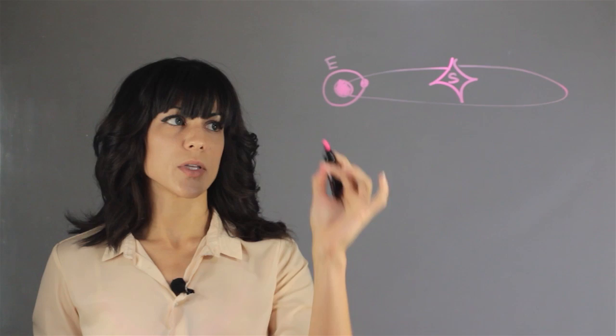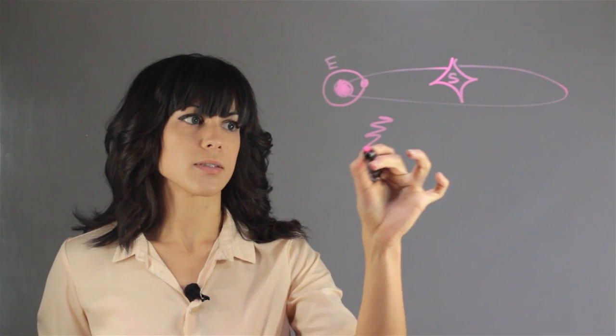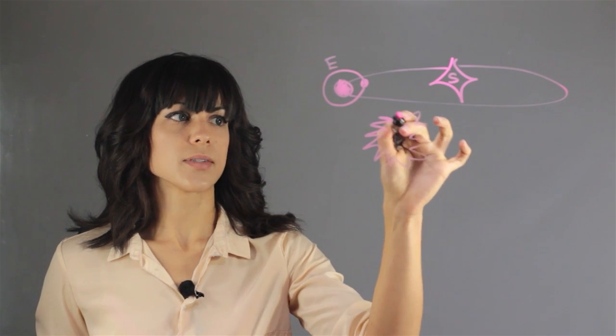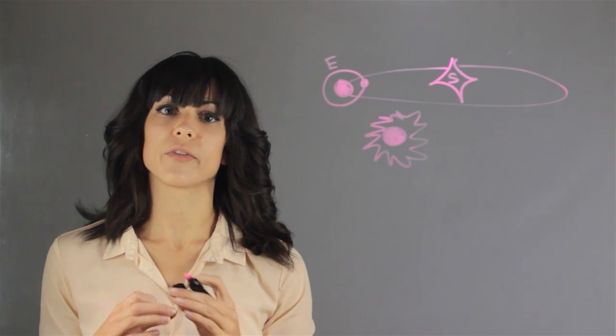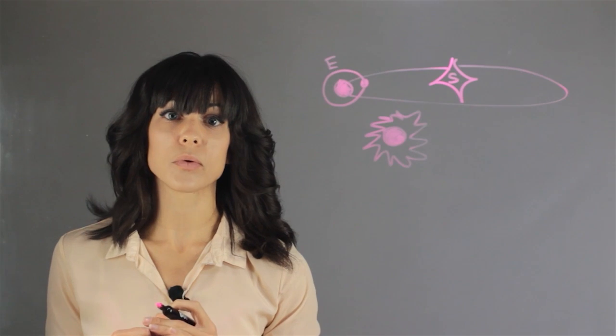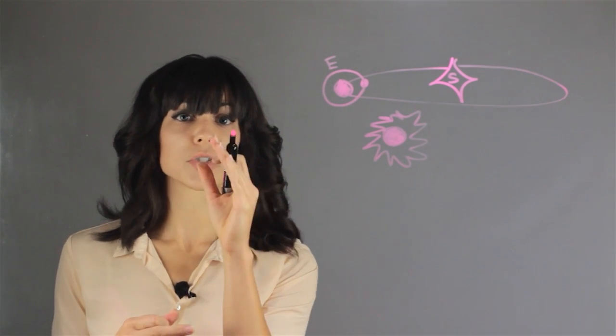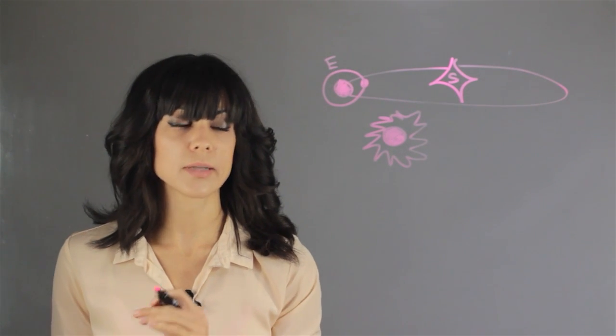And generally what you see is, let's say this is the light of the Sun, you'll see a dark circle in the Sun. Sometimes it will cover it entirely and that's called a full solar eclipse. Sometimes it's partially covered and that's a partial solar eclipse.